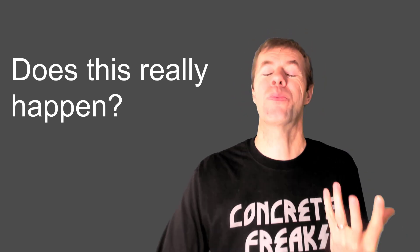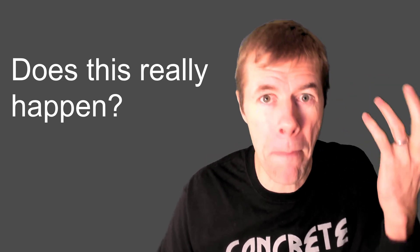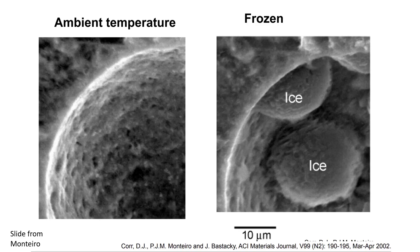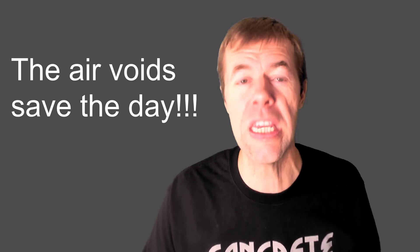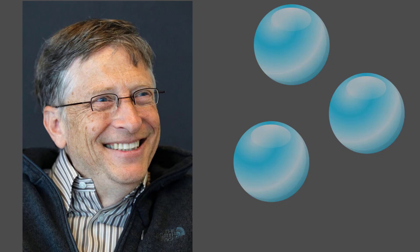Does this really happen? Here's a picture of an air void at ambient temperature, and here is one once it's frozen — you can see ice things growing on the inside of it. The air void saves the day. And that's why well-distributed bubbles love concrete. Seriously, who doesn't love bubbles? They save concrete.